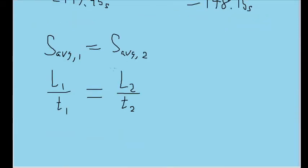The L's refer to the lengths of each track, assuming they're different, and the T's refer to the time it takes for each runner to reach their goal. We want to algebraically solve for L₂ minus L₁, or the difference in lengths where L₂ is larger.